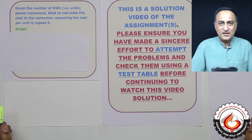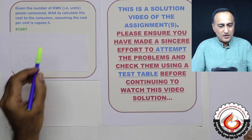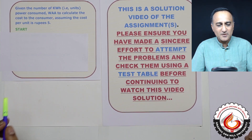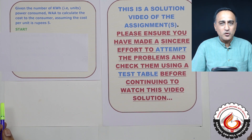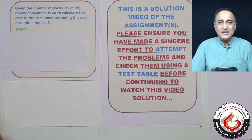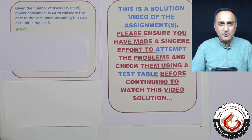In the second decision making algorithm exercise, you are asked to write an algorithm to calculate the cost to the consumer, assuming the cost per unit is rupees five. A unit is nothing but one kilowatt hour. This problem was purposely included to force you to think normally, because it does not require making any decisions. Since you can get used to thinking in a particular way, this is meant to give you a little surprise so that you do not lose the ability to think.